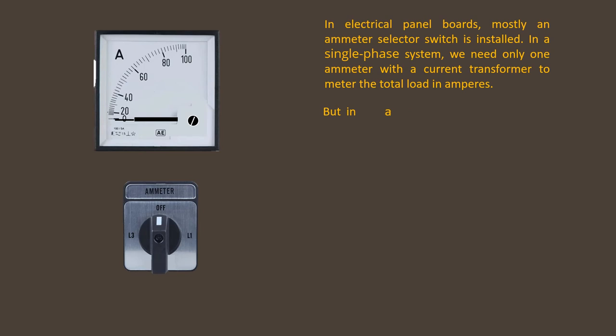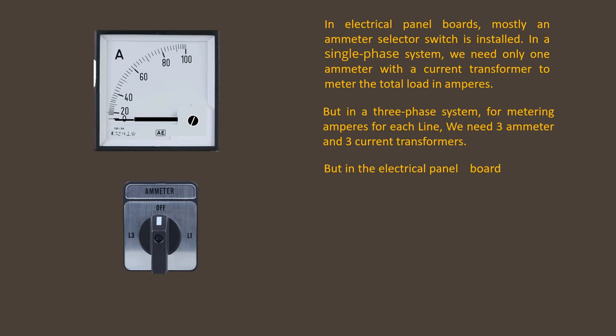But in a three phase system, for metering amperes for each line, we need three ammeters and three current transformers. But in the electrical panel board, we can do this with only one ammeter or ampere meter by using the ammeter selector switch.